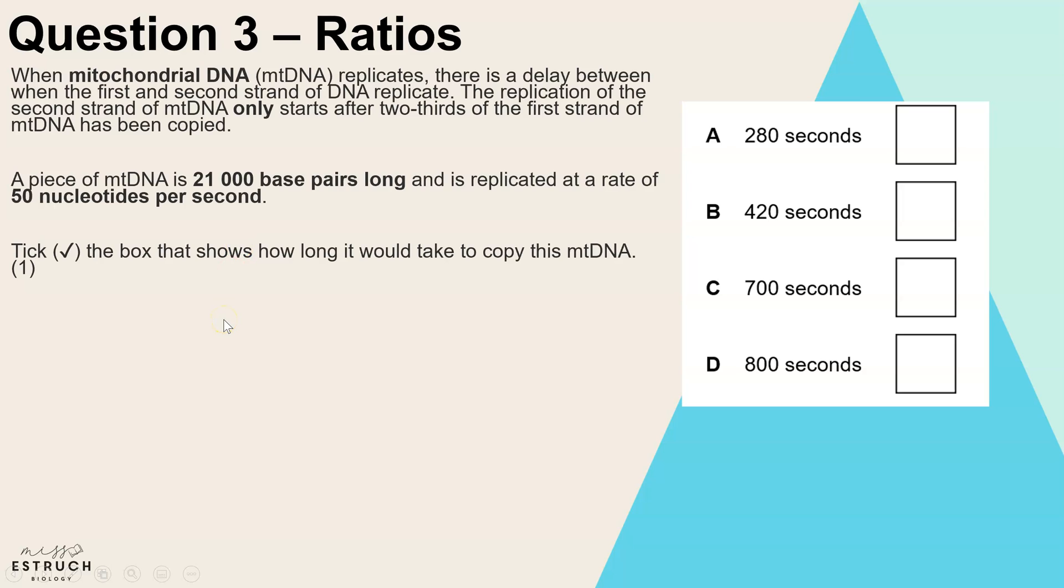So first of all, let's get our head around this two-thirds of the way through it starts copying. We're told that the second strand doesn't start replicating until two-thirds of the way through, so I wanted to work out well, what is that as a distance in terms of base pairs. So I divided the 21,000 by three. So we know that one third is 7,000, two-thirds is 14,000. So only when 14,000 bases have been copied on strand one will the second strand start to replicate.